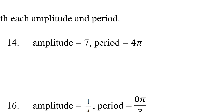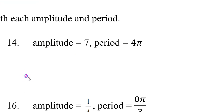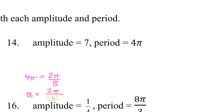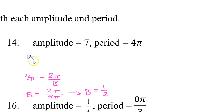For number 14, the period is 4 pi, so 4 pi equals 2 pi over b. Swapping gives b equals 2 pi over 4 pi. The pi's cancel out, giving b equals 1 half. The equation is y equals 7 cosine of 1 half x — there's my amplitude and my b value.